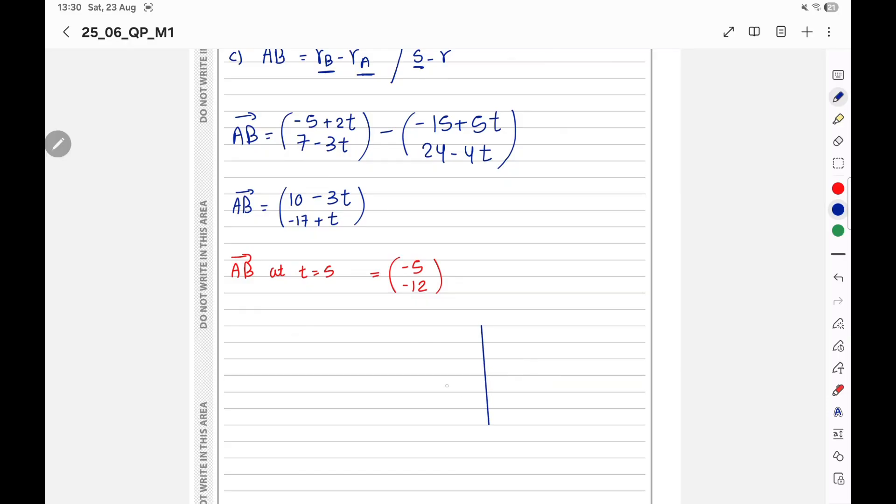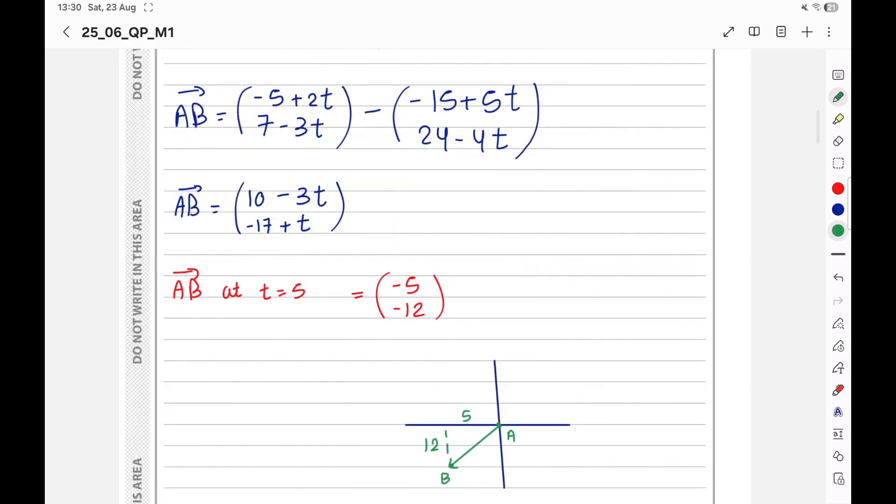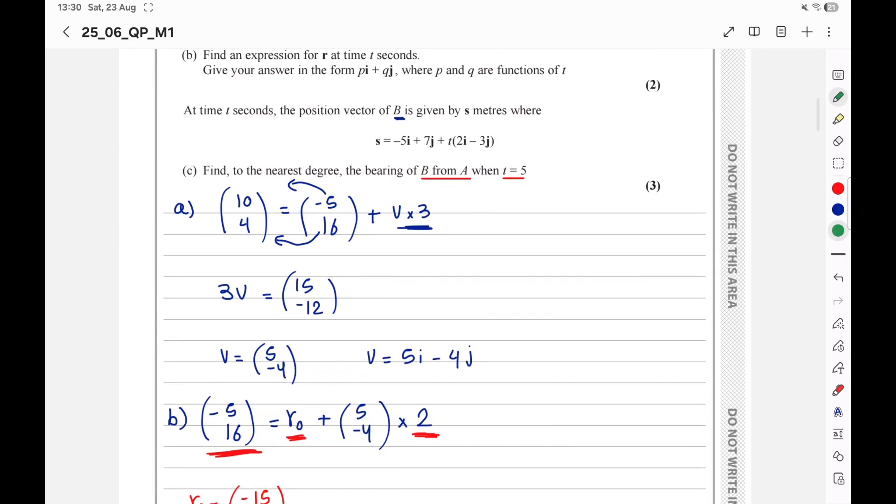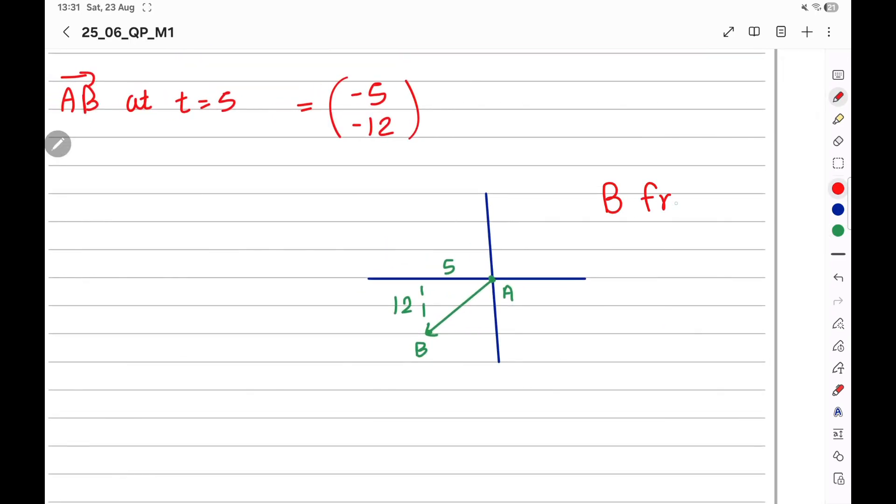The axis. Y axis and X axis. Negative 5 and 12 is something right here. 5 to the left and 12 down. This distance is 5 and this distance is 12. The vector I have just drawn is AB. So this point is A and the final point is B. He wants the bearing of B from A. This means I will draw the north at A. B from A. The north is drawn at the letter after from. North is drawn at A. Here is the north.